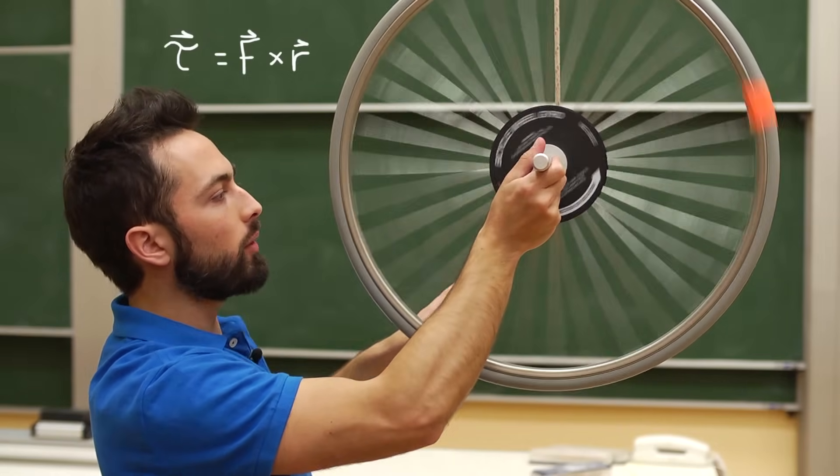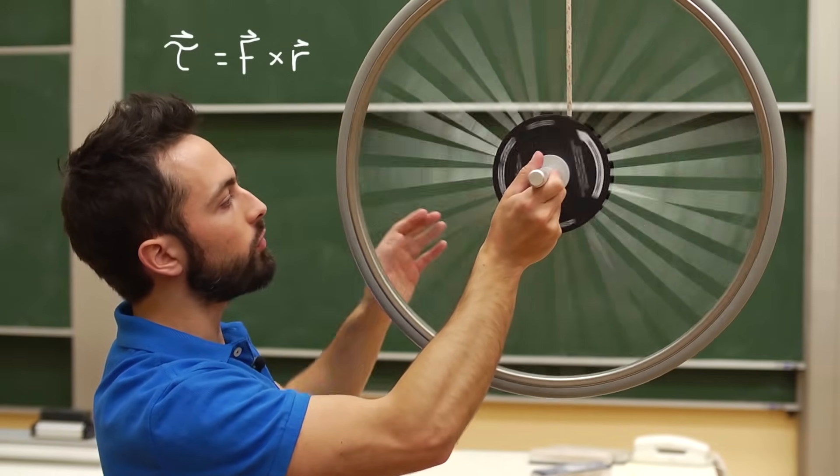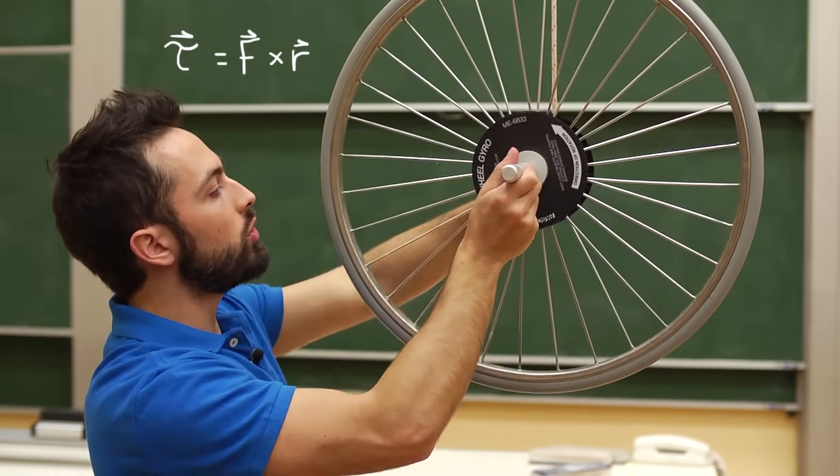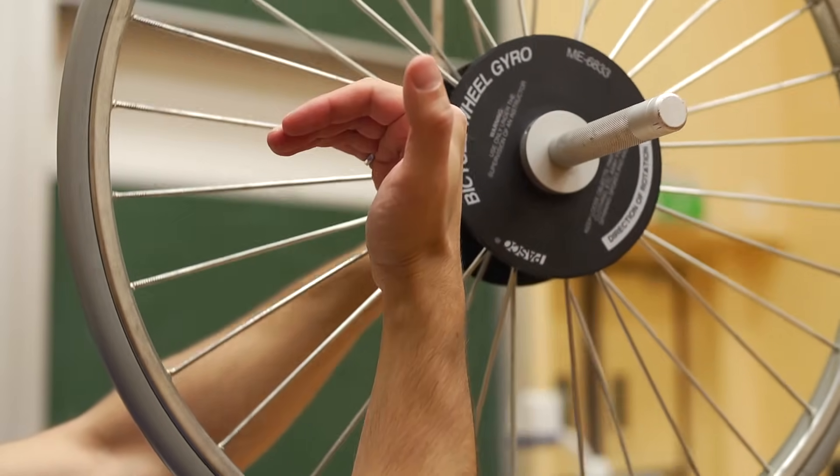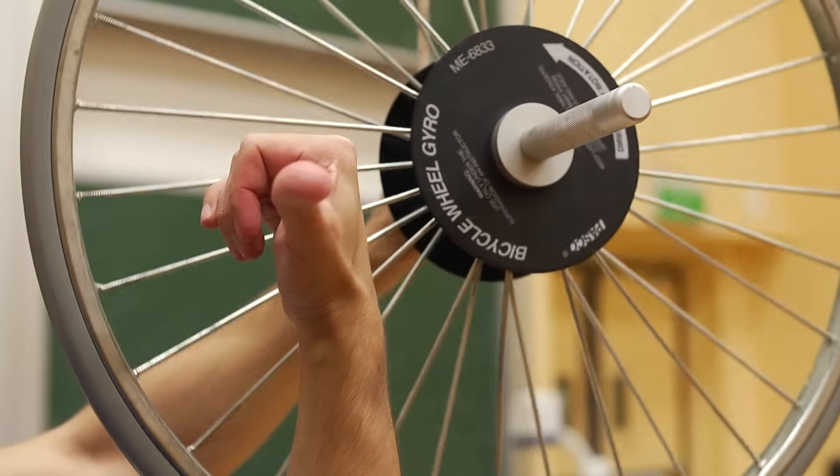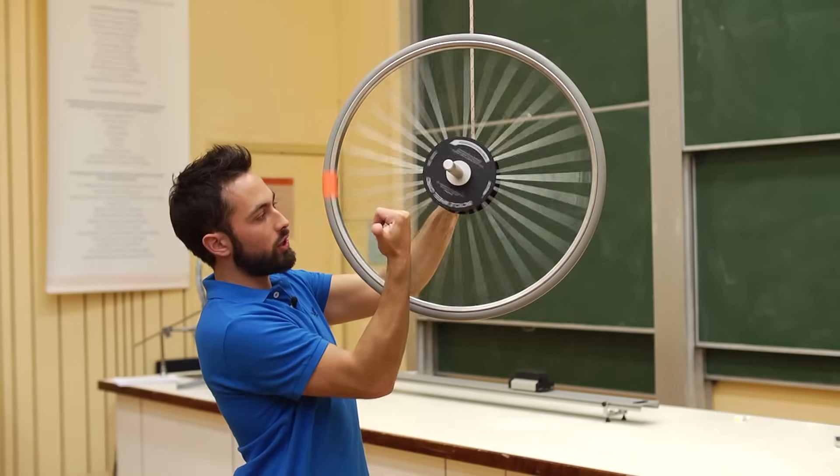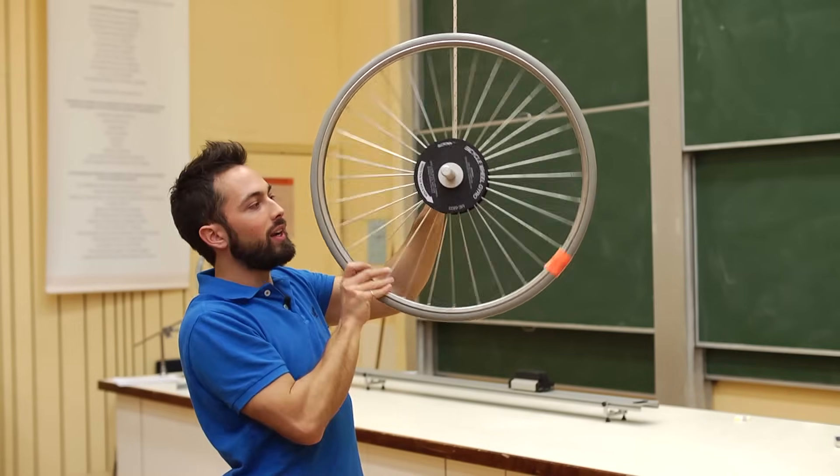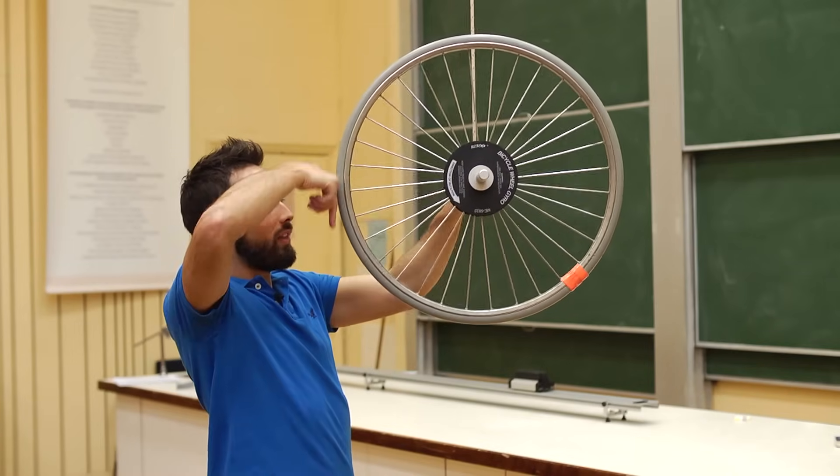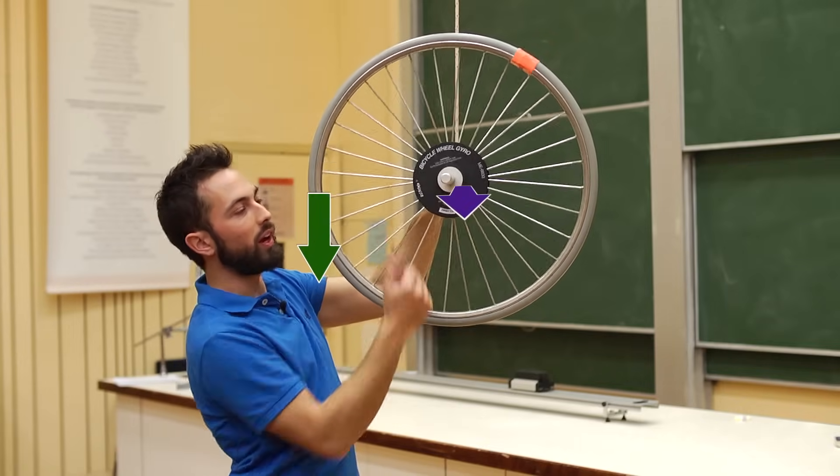Now what's the direction of that torque? Well we actually use a right hand rule to define this. So what you do is you put your fingers in the direction of the radius from the turning axis and curl them in the direction of the force, and your thumb points in the direction of the torque. So the torque is actually out this way at 90 degrees to the force. The force is down that way but the torque vector is actually pointing out this way.